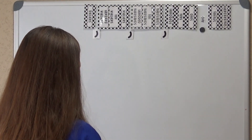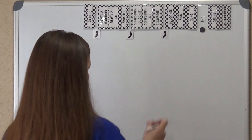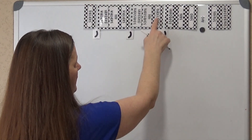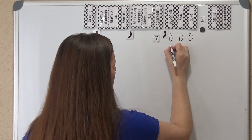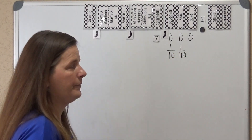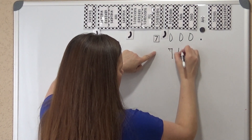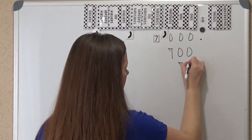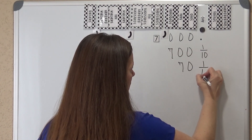Now we're going to look at the place value position as one-tenth of the place to its left. For instance, if I am at $7,000, this number to the right is going to be one-tenth the value, and this number is going to be one-hundredth the value. So: 7,000 — this is one-tenth the value, and this is one-hundredth the value.